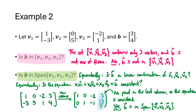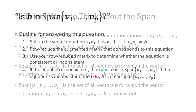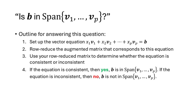This gives us several ways to think about span. The span of {v1, ..., vp} is the set of all linear combinations c1v1 + c2v2 + ... + cpvp, which equals the set of all vectors b for which the vector equation x1v1 + ... + xpvp = b is consistent. To test whether b is in the span: set up the vector equation, row reduce the augmented matrix, and check for a pivot in the final column. If consistent, b is in the span; if inconsistent, b is not.